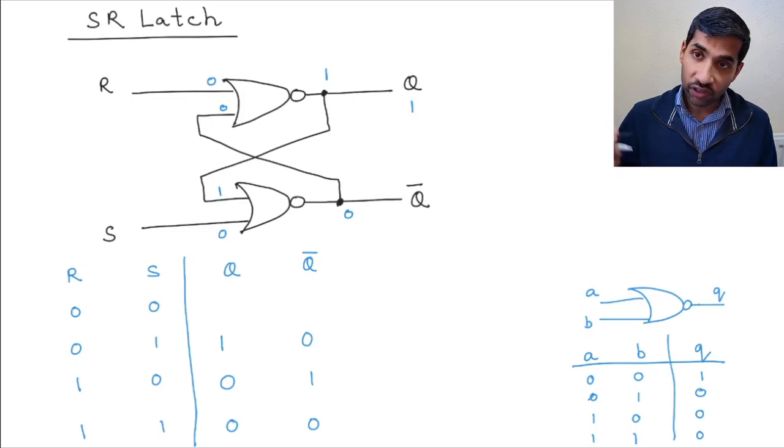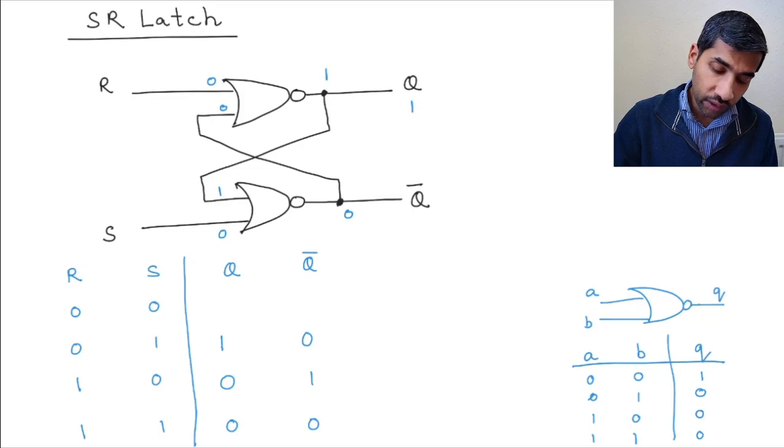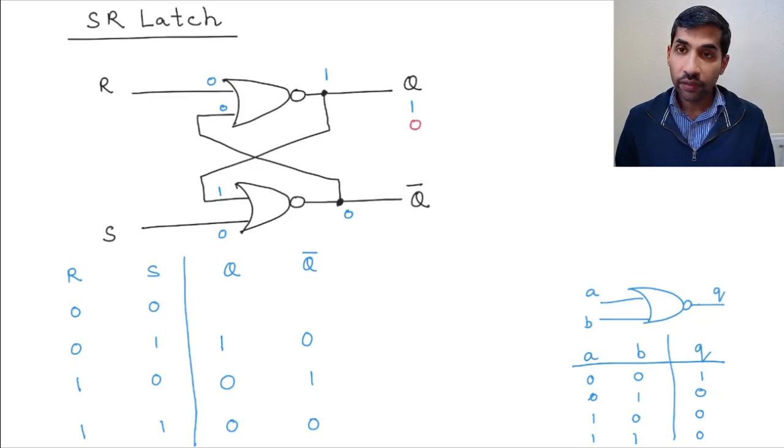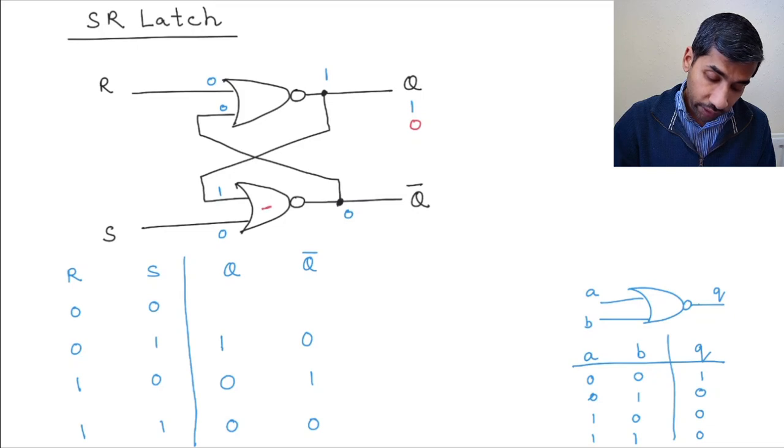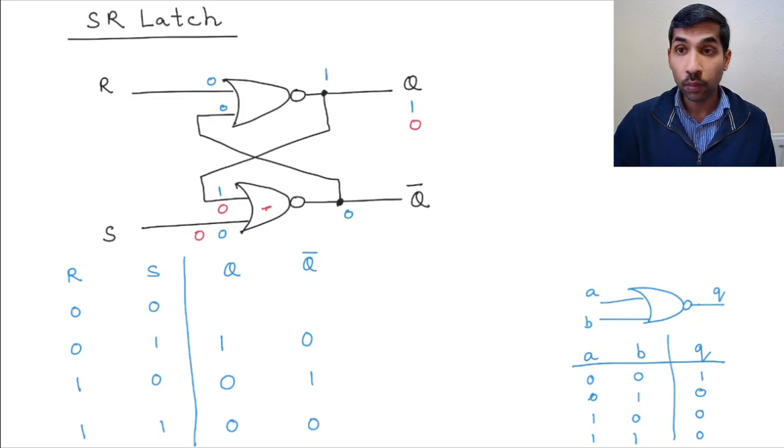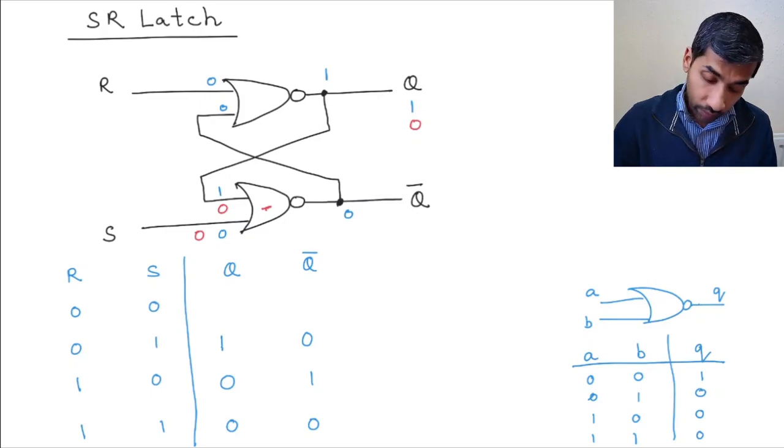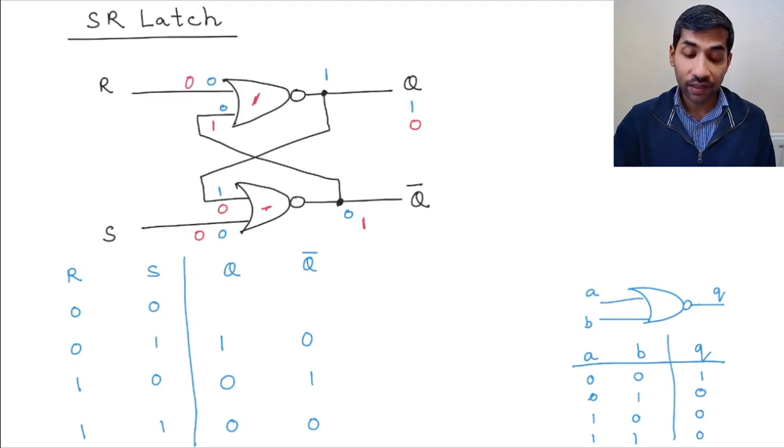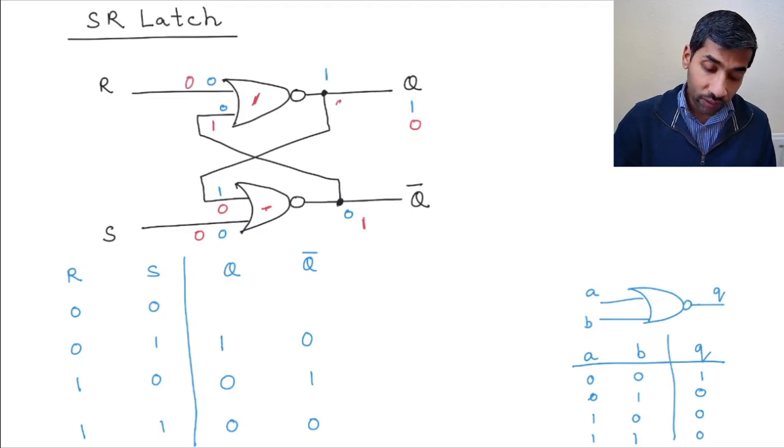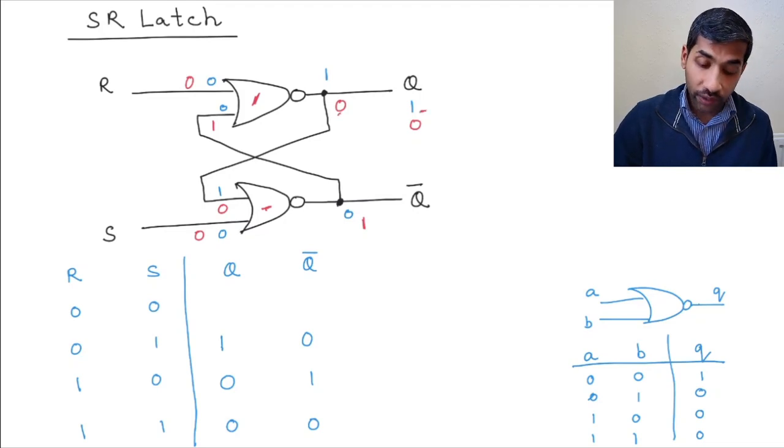Now, let's change this state. Let's assume that Q is, to start off with, Q is 0. If Q is 0, then the inputs to this NOR gate are 0 and 0. So what's the output of the NOR gate? It's 1. So Q bar is 1, which means what are the inputs to this NOR gate? It's going to be 1 and 0, which means what is the output of this NOR gate? It's going to be 0. So if Q was 0, it remains 0. If Q was 1, it remains 1.